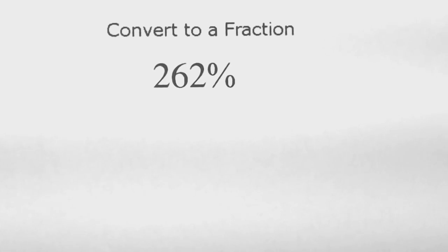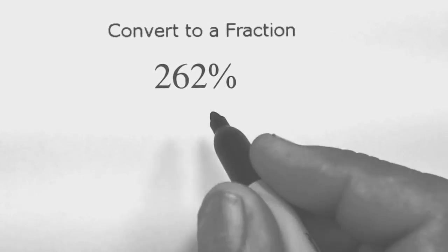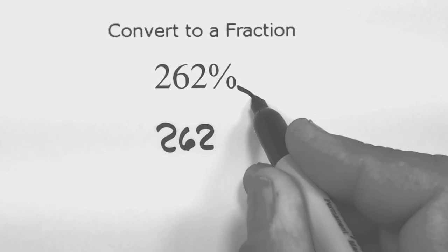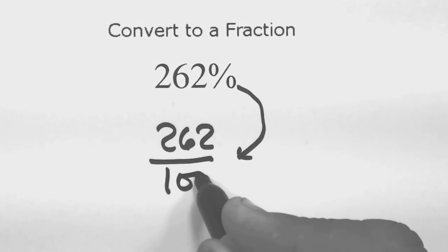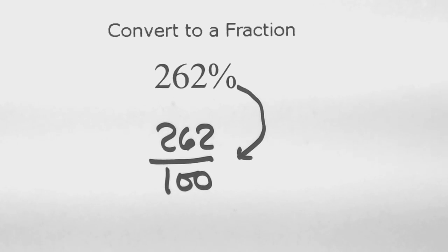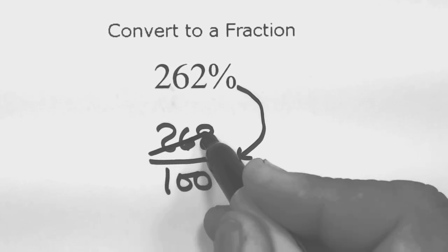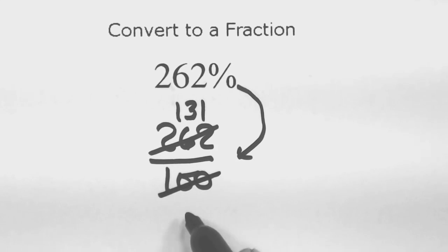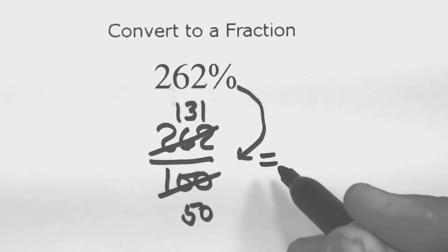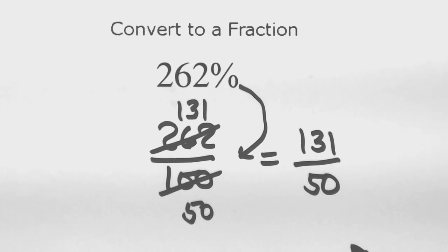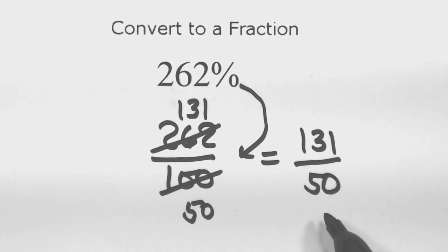Next problem: convert 262% to a fraction. Write two sixty-two and trade the percent sign in for over a hundred. Now reduce — two goes into both top and bottom: one hundred thirty-one upstairs and fifty downstairs. So we get one hundred thirty-one over fifty. We can't reduce it anymore; we can leave it as an improper fraction, or convert to a mixed number if preferred.